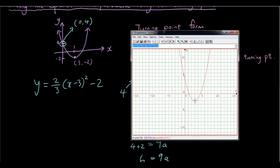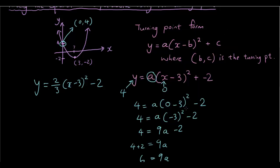The turning point is x equals 3 and y equals negative 2, and the y intercept is at y equals 4. So it has worked perfectly.